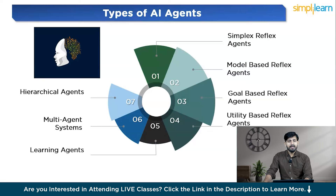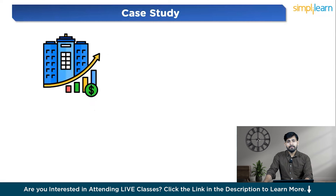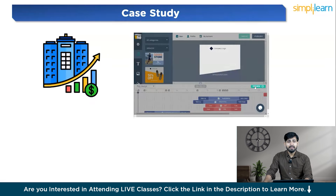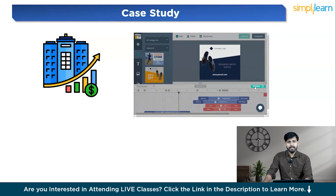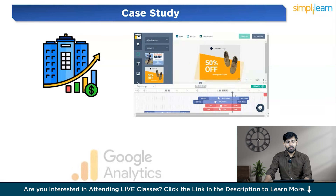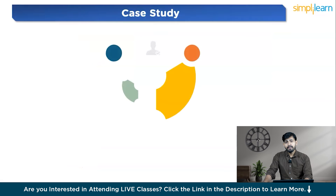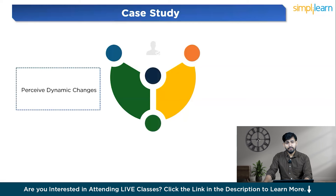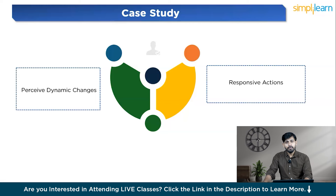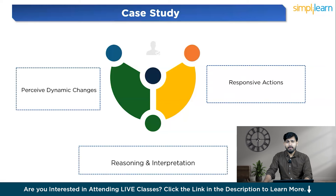Let us look at a case scenario to see how an AI agent works. Suppose a company aims to enhance its website performance and boost customer engagement. They utilize an AI agent integrated with Google Analytics. The first task is monitoring website traffic — the AI agent continuously monitors traffic data and tracks key metrics such as page views, bounce rates, and user demographics. Page views show which pages are attracting attention; bounce rates indicate the percentage of visitors who leave after viewing only one page, signaling potential engagement issues.